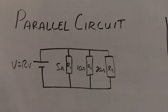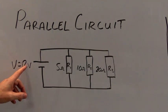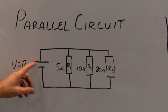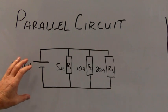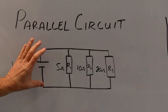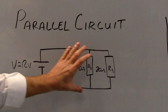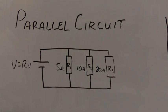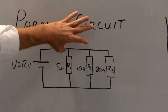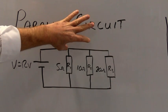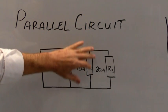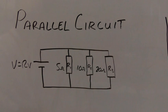The topic of this tutorial is parallel circuits. As you can see from the diagram, we have a 12-volt voltage source — in this case a battery — connected to either end of three resistors R1, R2, and R3. The resistors are parallel to each other, like a pair of parallel lines, which is why it's called a parallel circuit.